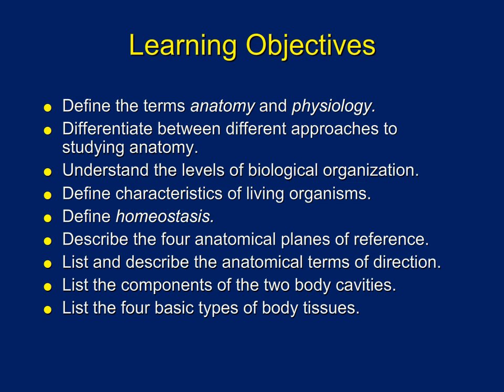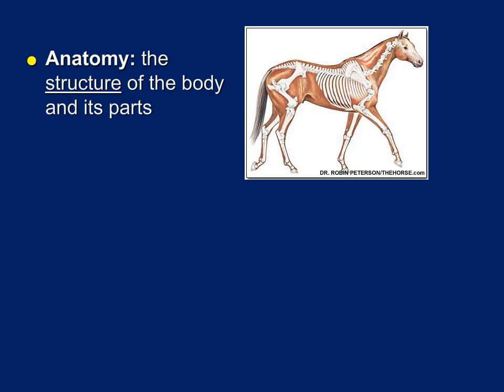We should probably start out today's lecture with a definition of anatomy and physiology, since that's the name of the course. As you probably already know, anatomy has to do with the structure or parts of a living organism. For example, if you take a look at this diagram of the horse, you can see all the different bones — these are part of its anatomy, in addition to the muscles, the organs, and so forth. There are all different types of anatomical structures in vertebrate animals.